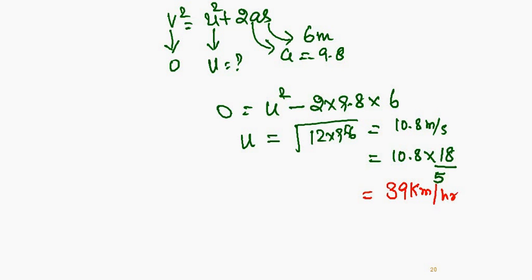So what do you conclude? The speed sign is 40 km/h and the calculated speed is 39 km/h, so he is not over-speeding. The concept here involves both math as well as science.